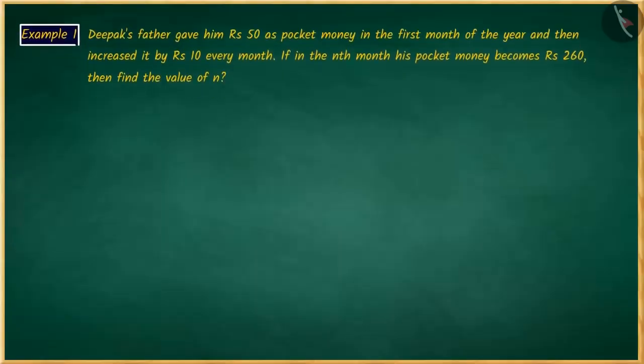Deepak's father started giving him rupees 50 as pocket money in the first month of the year and then increased the monthly pocket money by rupees 10. If in the nth month his pocket money becomes rupees 260, then find the value of n.